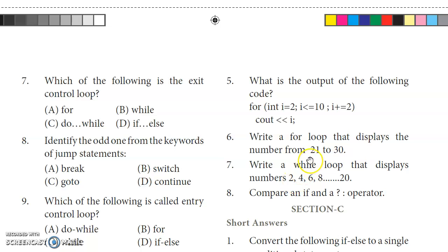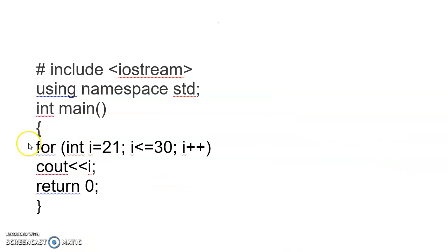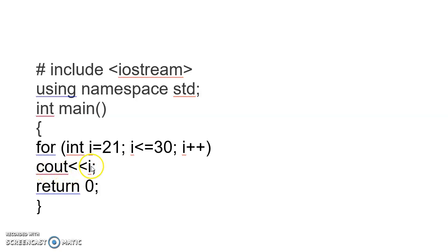Sixth question: write a for loop that displays numbers from 21 to 30. The program uses the standard namespace, int main, with a for loop. Since there is only one statement in the loop body, curly braces are optional. Finally, the program ends with the return 0 statement.